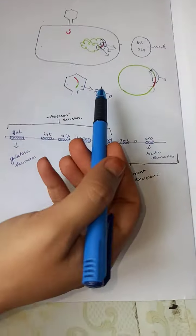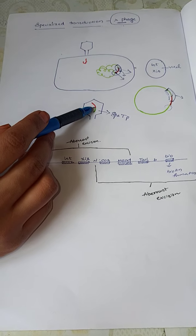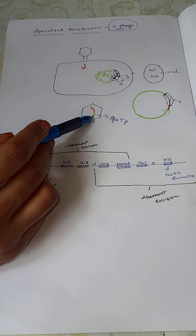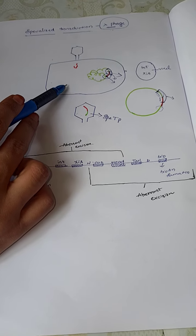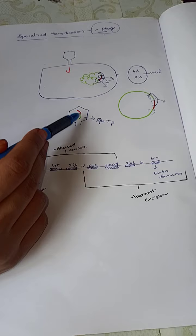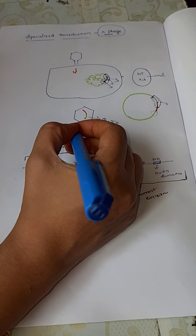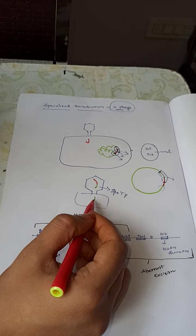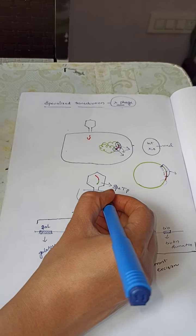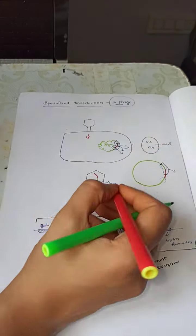In specialized transduction, a small portion of viral genome and a portion of bacterial genome get packed into the virus particle. The bacterial cell undergoes lysis and virus particles come out, then infect a new bacterial cell. They transfer this bacterial and viral genome together as a single molecule, which gets integrated with the new bacterial genome.